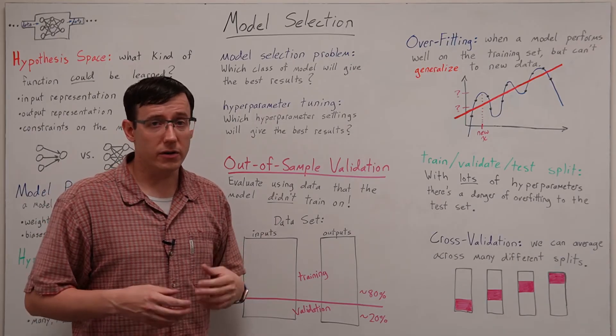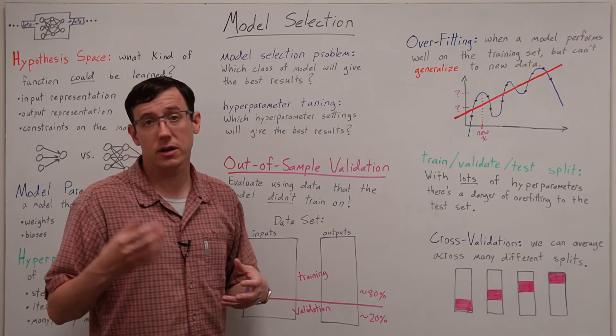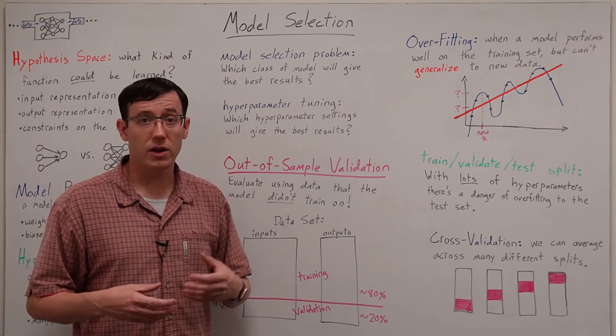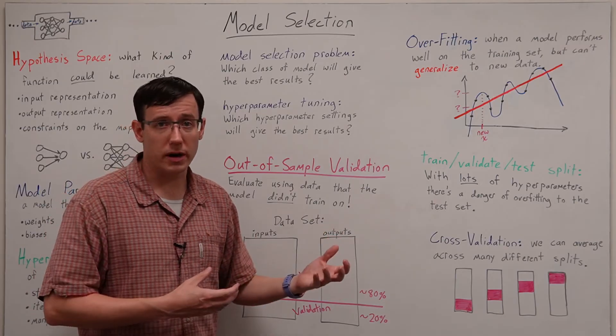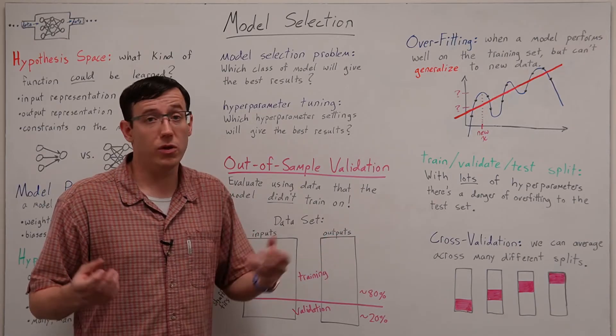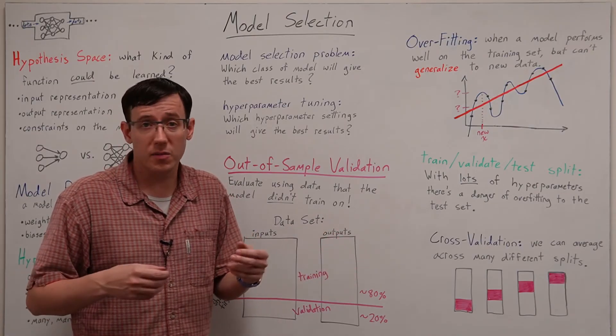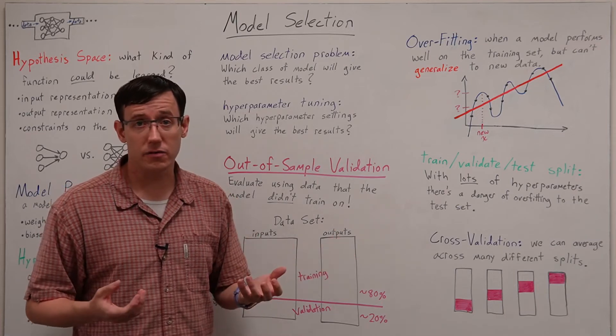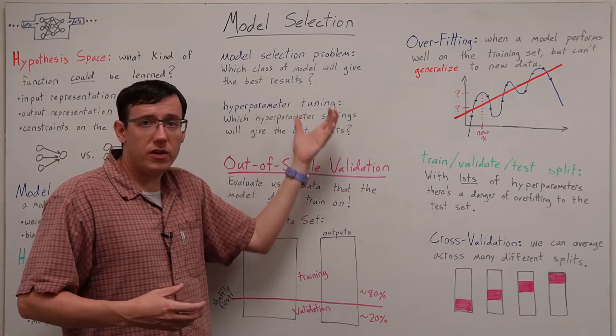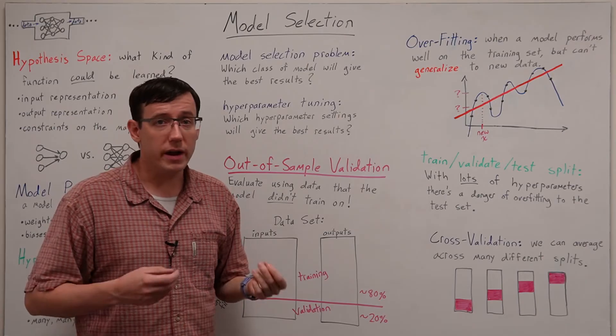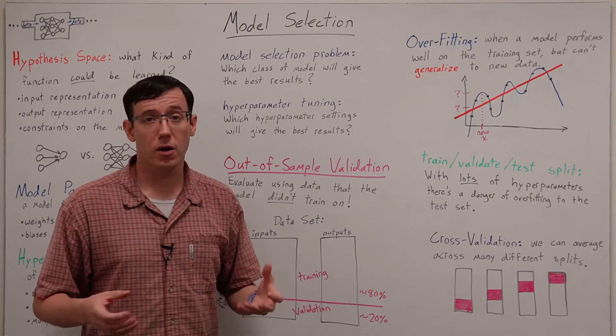There may not always be a clear difference between what constitutes a hyperparameter and what constitutes a different class of model. Sometimes when we talk about different architectures for deep learning we'll have different ways of organizing the nodes in a neural network and we'll think of those as different classes of model but other times we'll vary the number and connectivity of nodes and think of that as a hyperparameter of a particular model. And so in both of these problems what we're doing is really just trying to figure out among the available options which will be most effective for our particular problem.